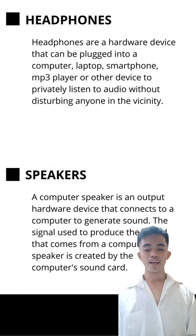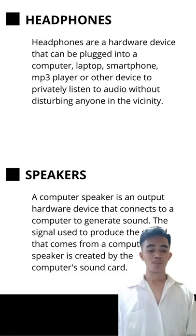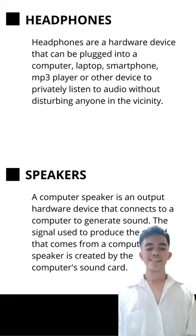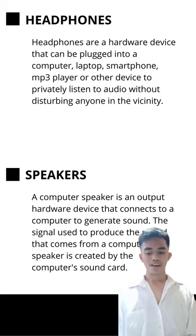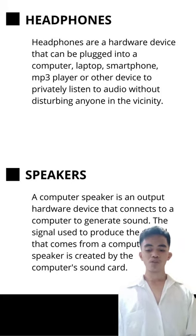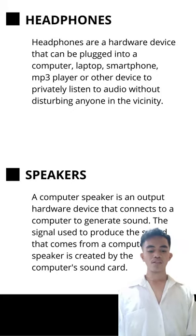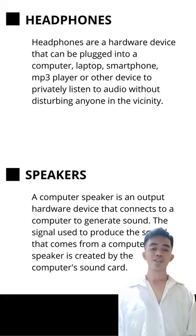Next is headphones. Headphones are a hardware device that can be plugged into a computer, laptop, smartphone, MP3 player, or other device to privately listen to audio without disturbing anyone in the vicinity. Next is the speaker. A computer speaker is an output hardware device that connects to a computer to generate sound. The signal used to produce the sound comes from the computer's sound card.